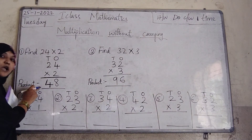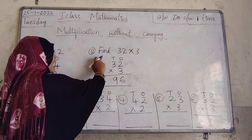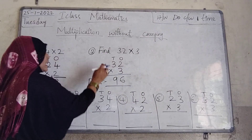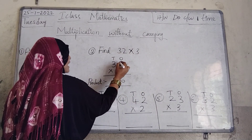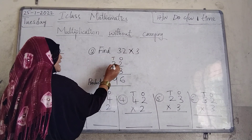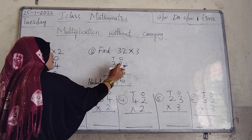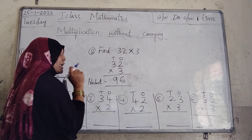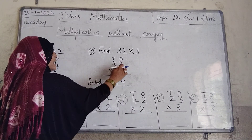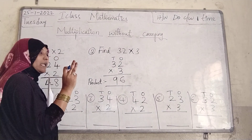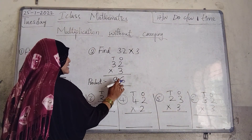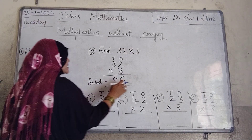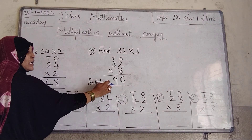This is multiplication without carrying. Next, see here another one — find 32 into 3. The previous was a 2 times table sum, now this is a 3 times table sum. In 32: 1's place is 2, and 10's place is 3, so 3 times 10 is 30, plus 2 is 32. For 32 into 3 we use the 3 times table: 3 ones are 3, 3 twos are 6, 3 threes are 9. The answer is 96. 32 into 3 is equal to 96. This is called the product.